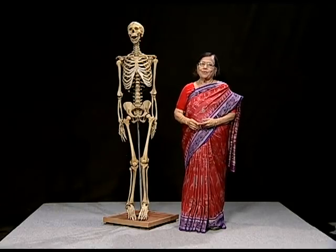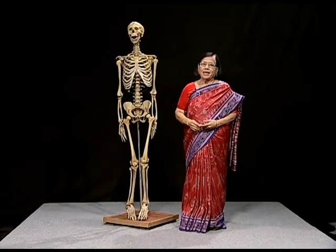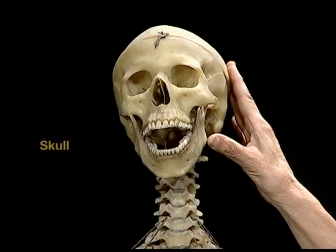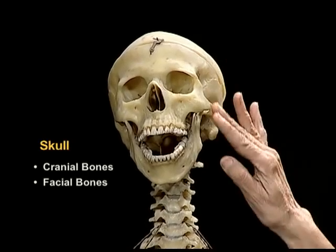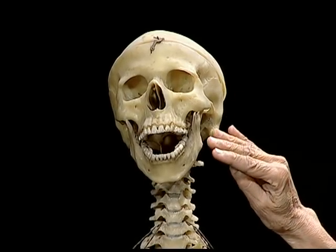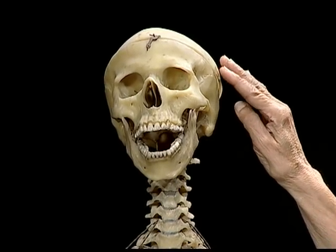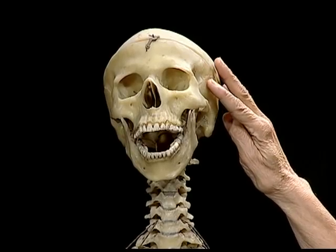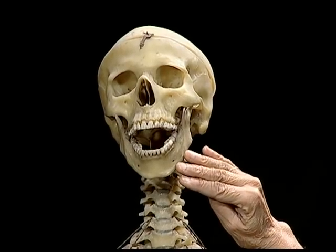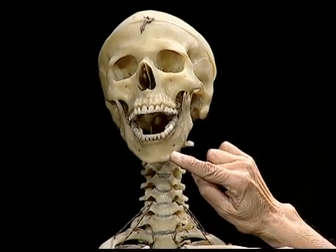Let me start explaining the bones in this skeleton, starting with the head, which is part of the axial skeleton. You can see the skull here — it has two parts: the cranium and the facial bones. There are eight bones in the cranium and fourteen bones in the facial region. The cranium bones are attached to each other by sutures, so they do not move much.